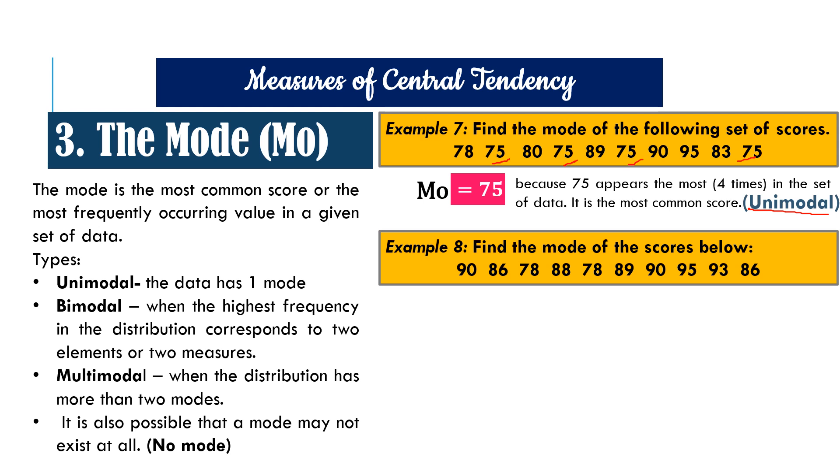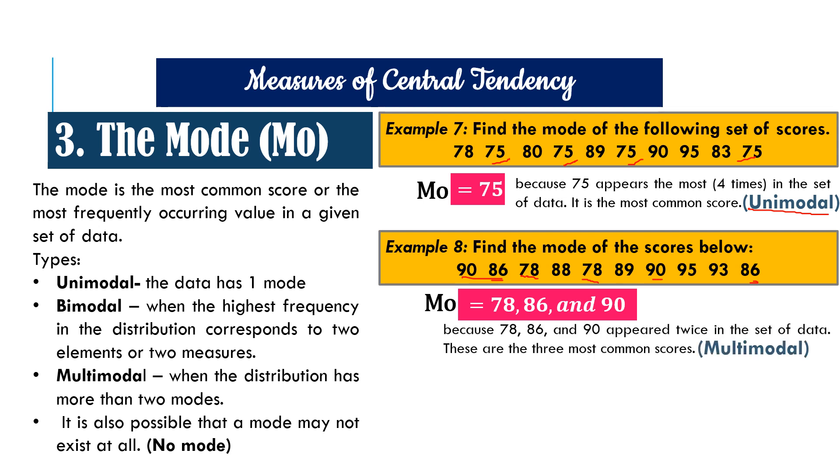Example eight, find the mode of the scores below. Here are the scores. And in this case, it has three modes, which is 78, 86, and 90. Why? Because 78 appeared twice, 86 appeared twice, and 90 also appeared twice. This is an example of a data which is multimodal because it has more than two modes.